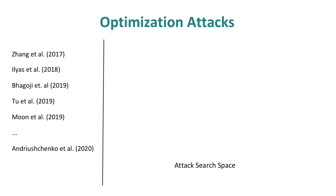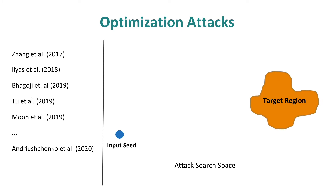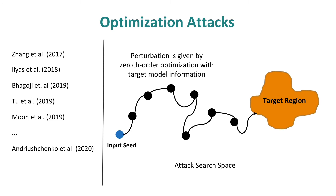Next, I'll introduce the optimization attacks. The goal is still to add imperceptible perturbation to the input seed such that it can cause desired misclassification for the target model. We represent the desired misclassification by a target region. The perturbation is generated using zero-order optimization techniques with information directly from the target model. One commonly used technique is the finite difference method to estimate the gradient of the black box target model. The attack then produces an adversarial example that lies in the target region.